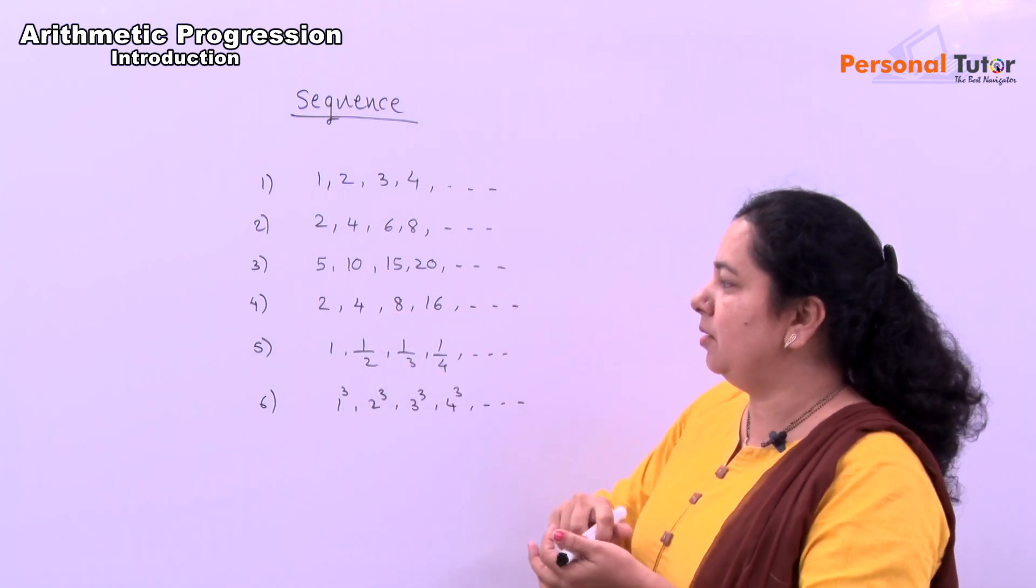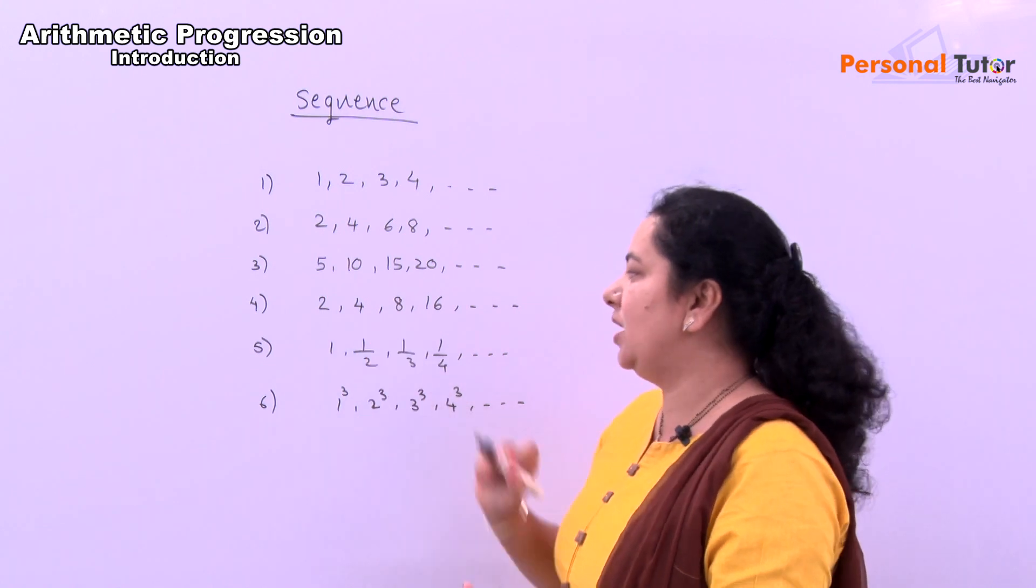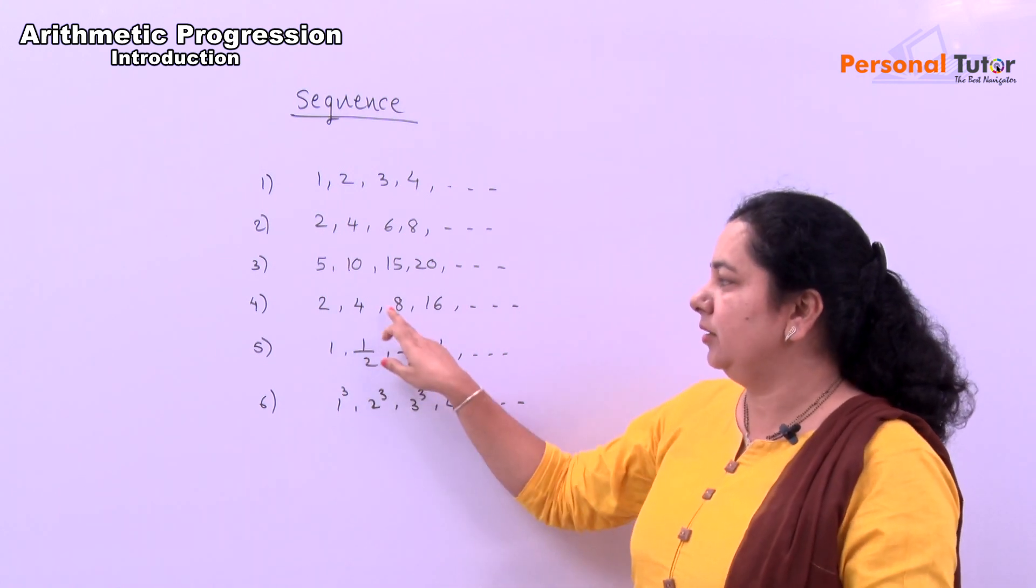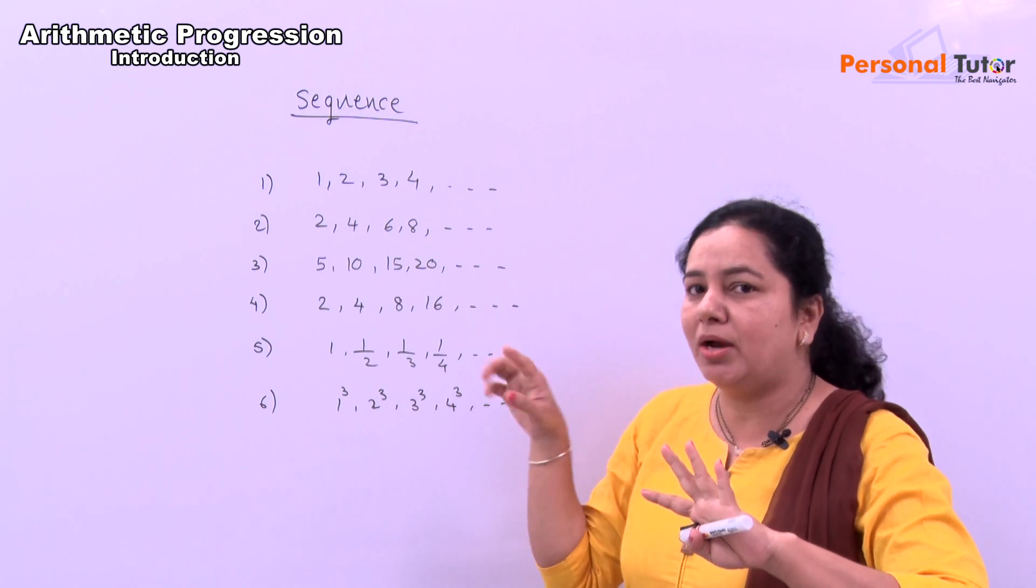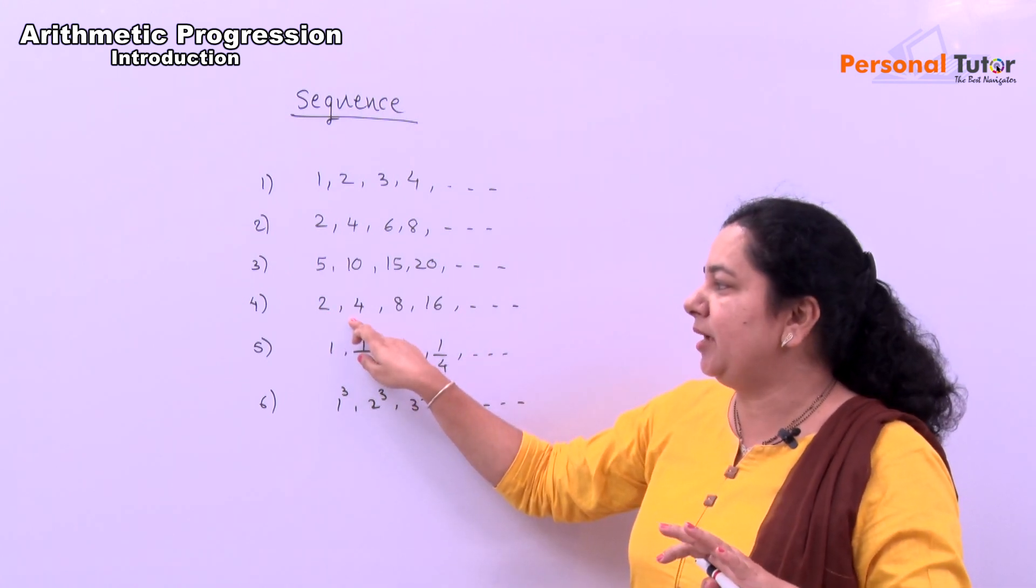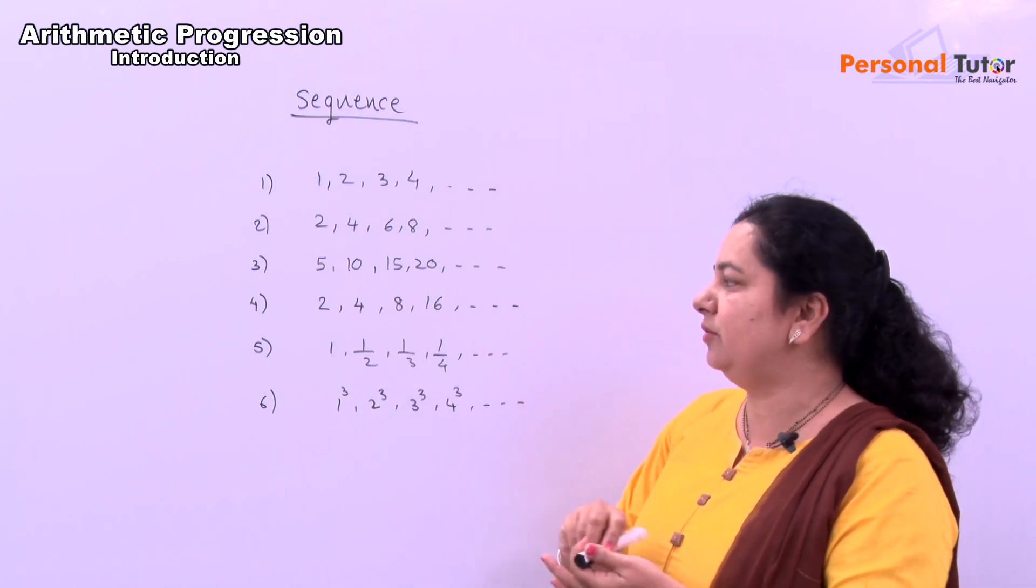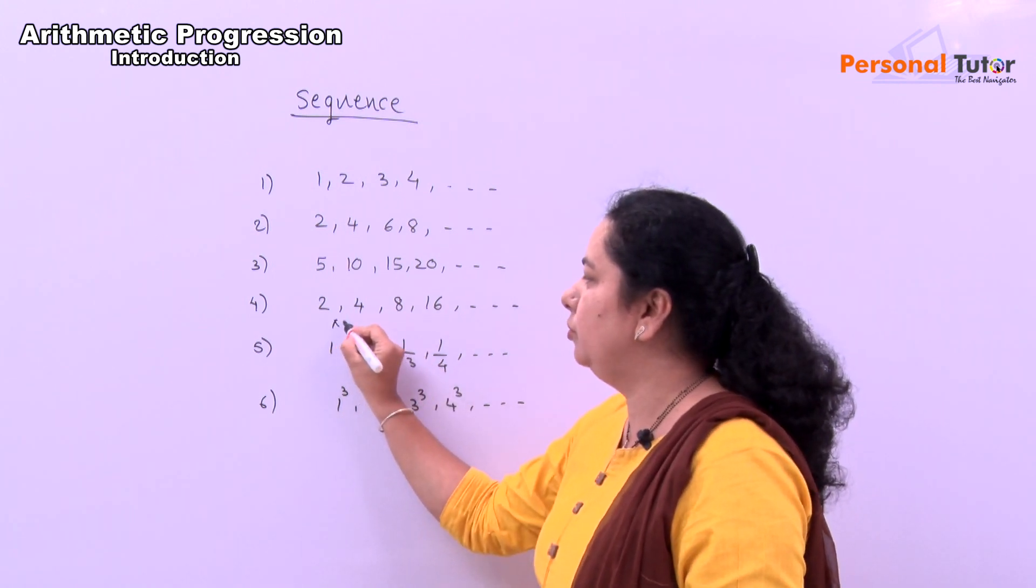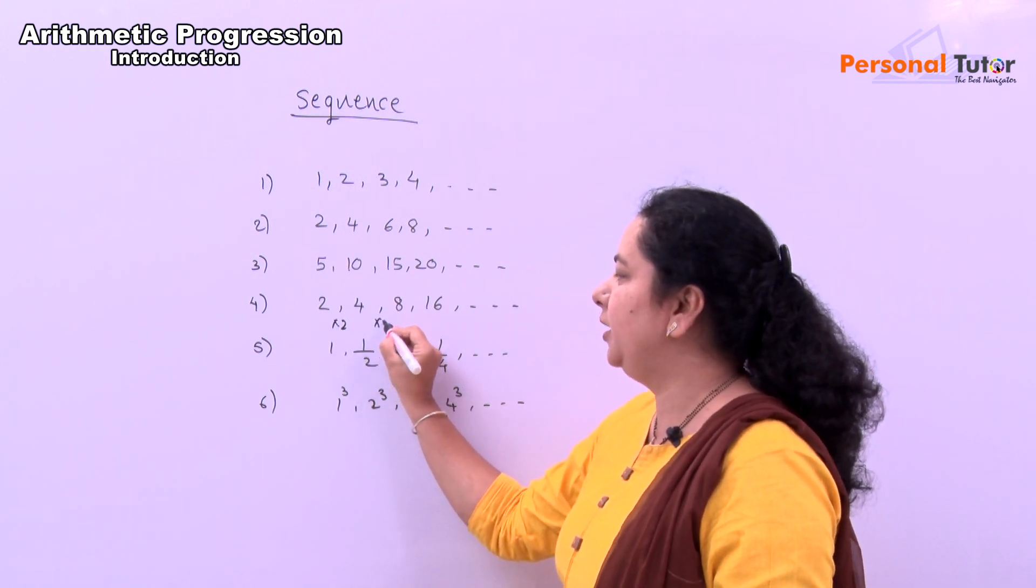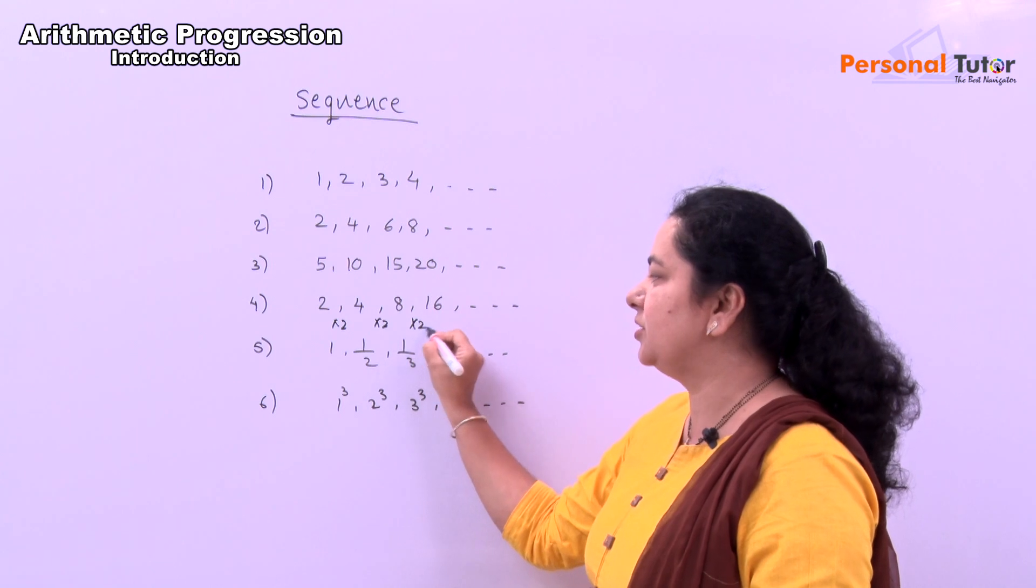But in fourth example, here, 2, 2's are 4. 4, 2's are 8. 8, 2's are 16. Means you are not adding. Here, you are multiplying. Just multiplying number. 2 into 2 becomes 4. Here, 2 into 2 becomes 4. 4 into 2 becomes 8. 8 into 2 becomes 16. Like this.